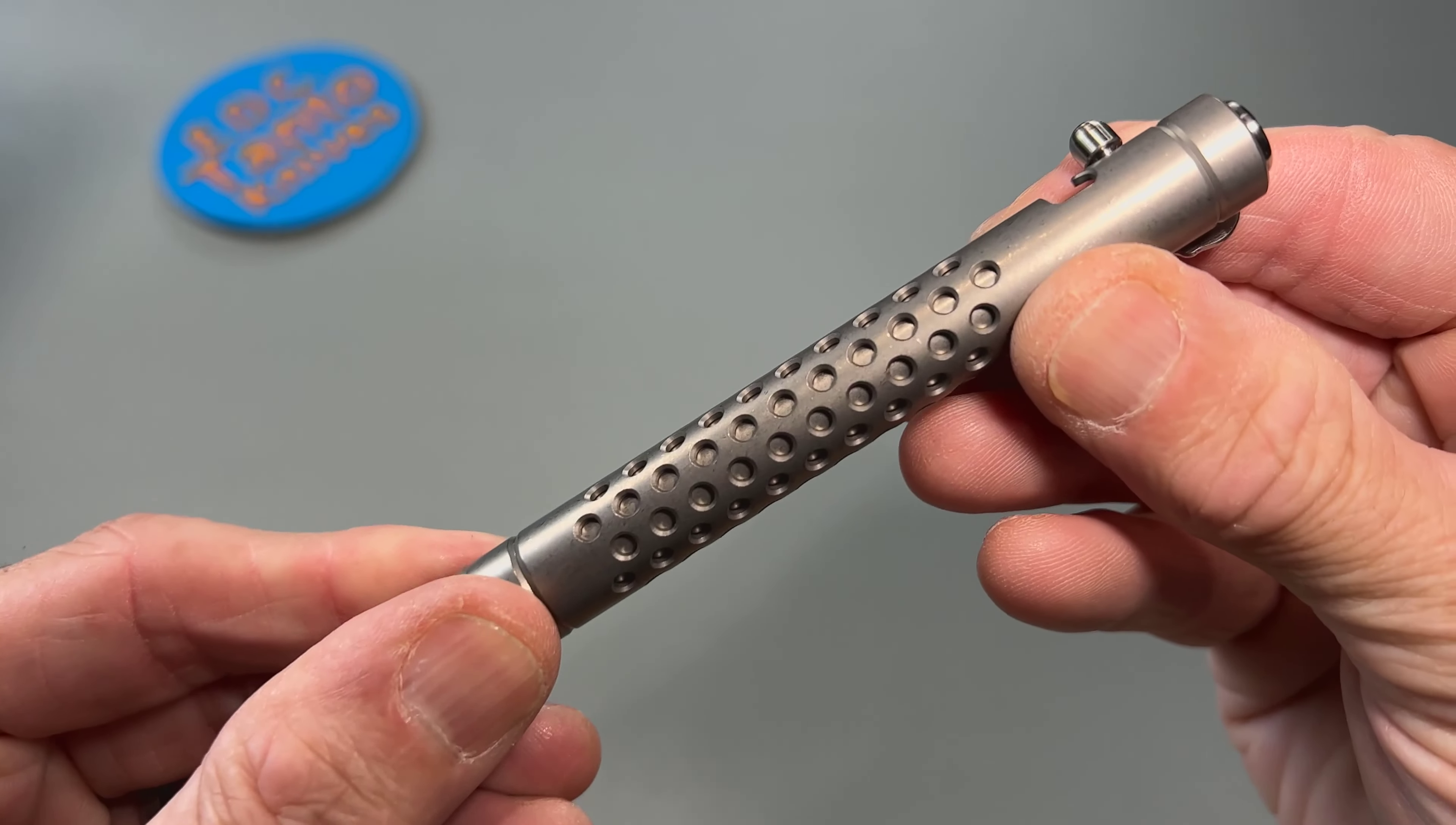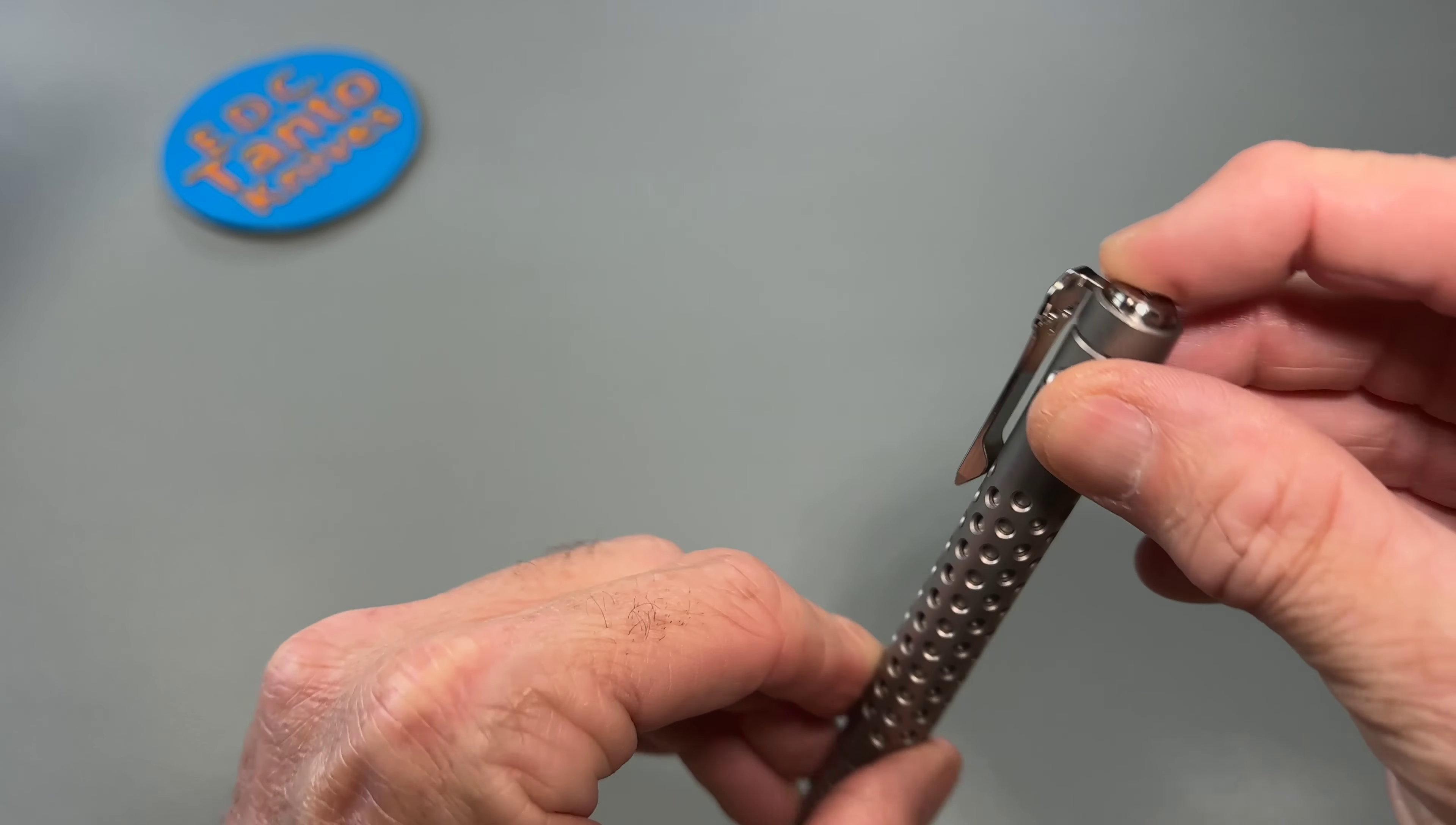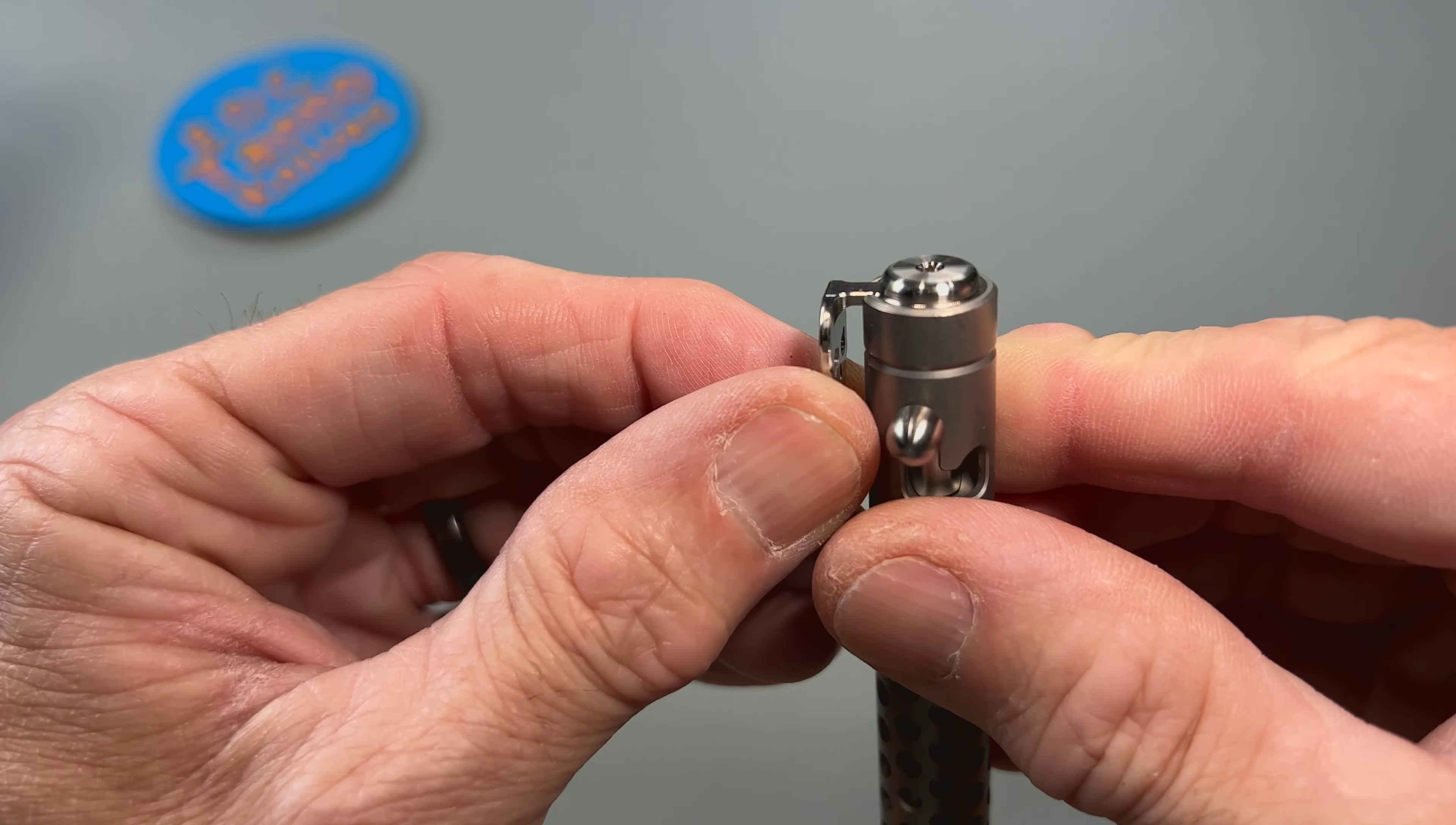Pocket clip comes off with a screw right there. Yeah I guess that whole cap unscrews and the pocket clip kind of sits in there. So very interesting.